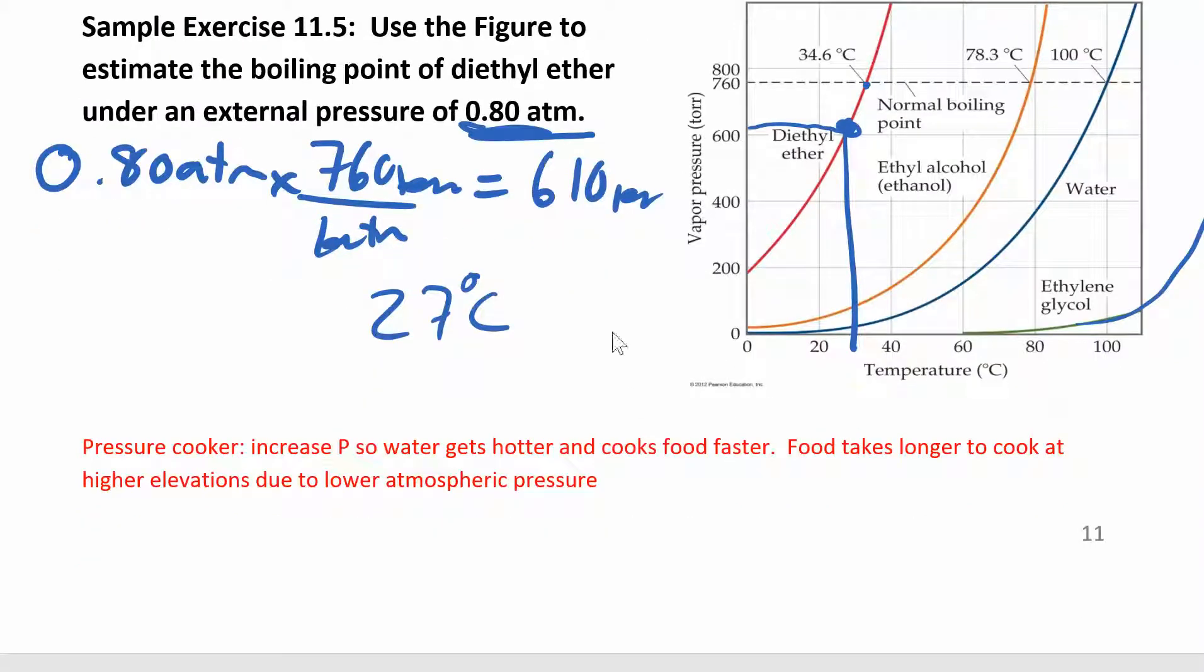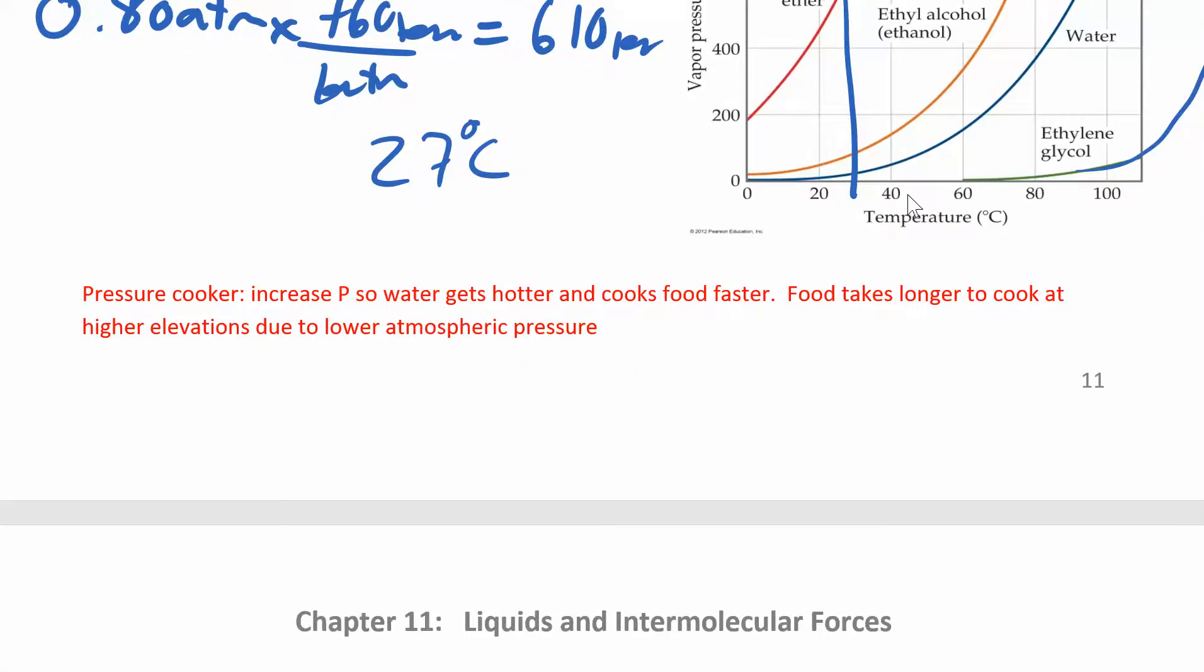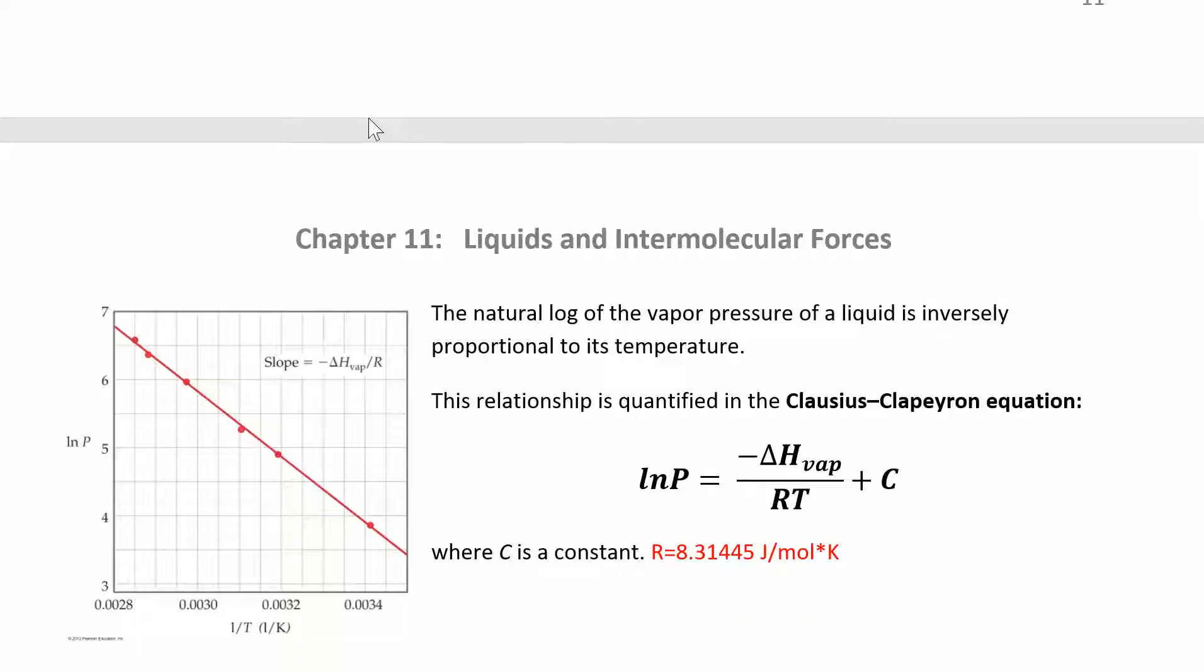So suppose you were able to measure vapor pressure at a bunch of different temperatures. You could make a graph. If you plotted the natural log of the pressure versus one over temperature, you get a straight line and your slope looks like this, and that's how you can get your enthalpy of vaporization. So this is called the Clausius-Clapeyron equation. You might see this again in like biochem or something. I've seen this a couple different places. It comes up again and again, but it's a linear equation.